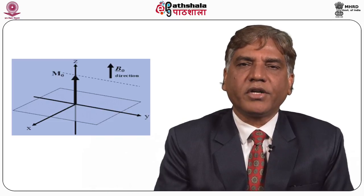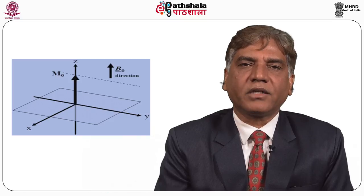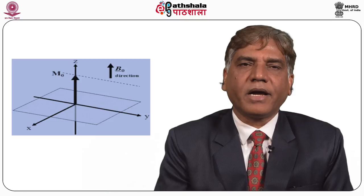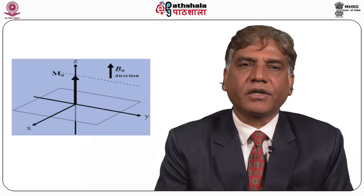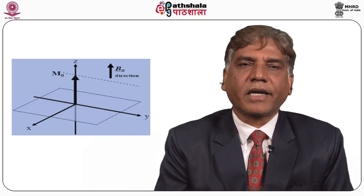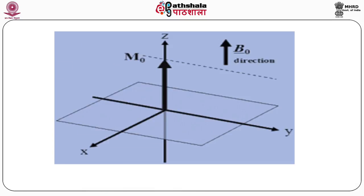The transverse components of all the nuclei cancel out, and the longitudinal magnetization vectors add up. An excess of hydrogen nuclei aligned along the direction of the main magnetic field line up parallel to B0 and create a net magnetization vector of the patient. In this figure you can see more nuclei are aligned along the direction of the main magnetic field than anti-parallel.